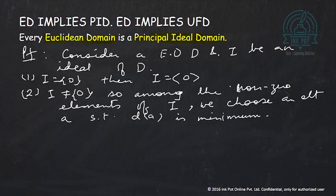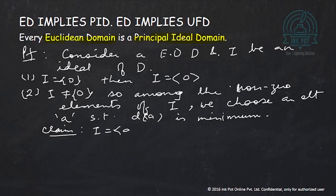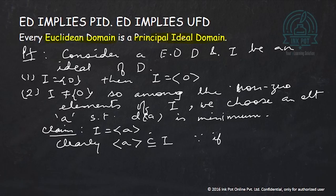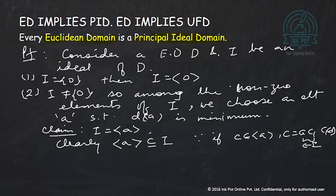Since I is nonzero, there is at least one nonzero element, and among all the nonzero elements of I we choose an element a such that the value of d at a is minimum — we can choose this by the well-ordering principle. We claim that I is generated by a. Clearly the ideal generated by a is contained in I, because if c belongs to ⟨a⟩ then c equals a·c₁ for some c₁ in D, and since I is an ideal, c belongs to I. Now we have to show that I is contained in ⟨a⟩.